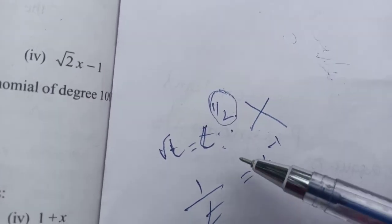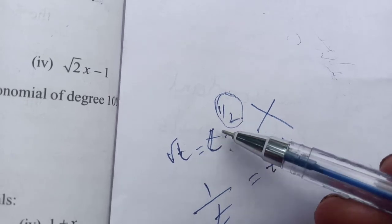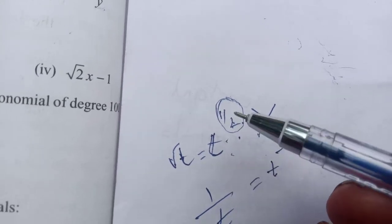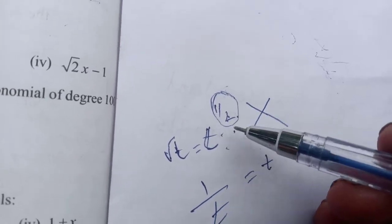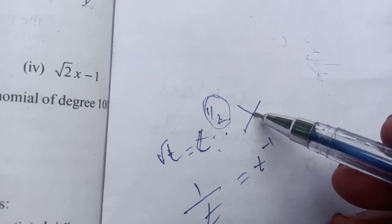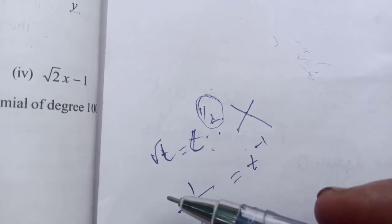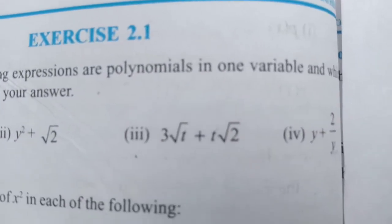As an exponent, we need to take a whole number or real number here. Then we cannot take it. It is not a polynomial. The third one is not a polynomial.